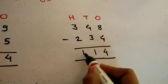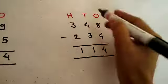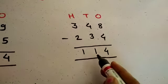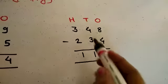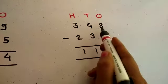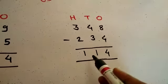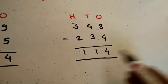Now we have 1 hundred, 1 ten, 4 ones. That is the number 114. So 348 minus 234 equals 114.